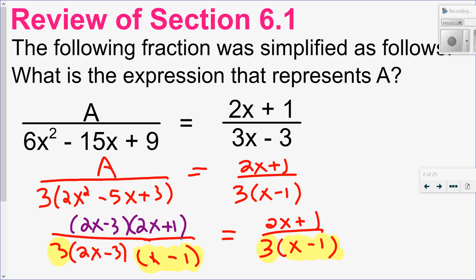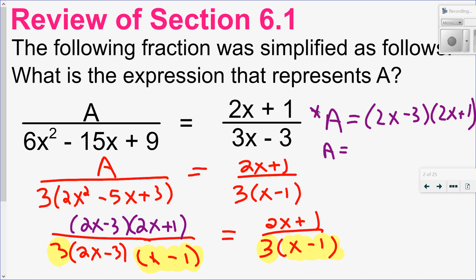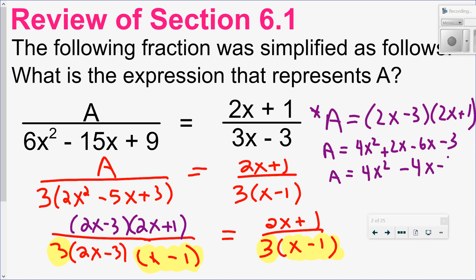So the expression that represents a: a will equal 2x minus 3 times 2x plus 1. Or, if one of the options is expanded, I could also expand it. If this was a written response question, I'm fine with ending it there, but I just want you to recognize another answer. It would be 2x times 2x, 2x times 1, negative 3 times 2x, negative 3 times 1, which is 4x squared minus 4x minus 3. Either one of those answers would be okay.